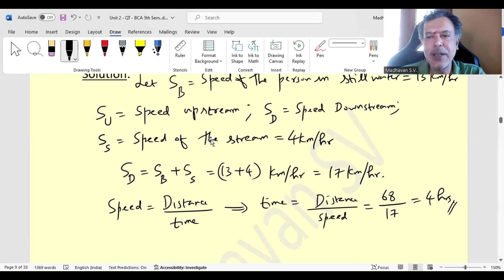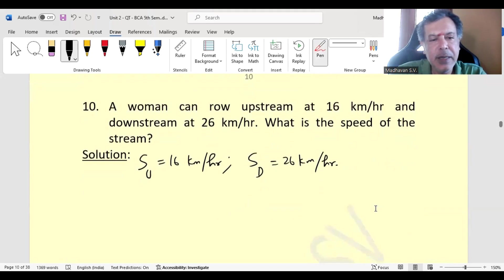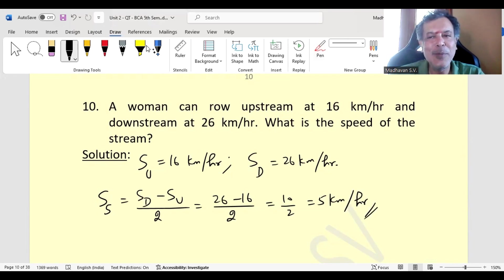Let us move on to the next. A woman can row upstream at 16 km per hour and downstream speed is 26 km per hour. We are supposed to find speed of the stream. Speed of the stream is speed of downstream minus speed of upstream divided by 2, that is 26 minus 16 by 2, which becomes 10 by 2 or 5 km per hour.